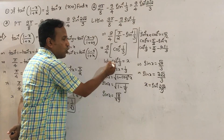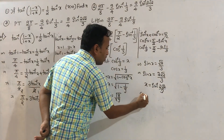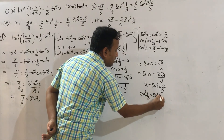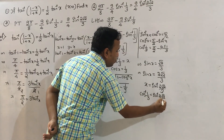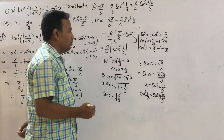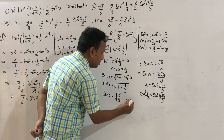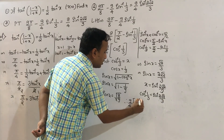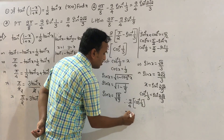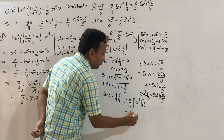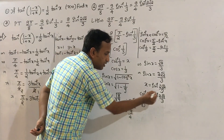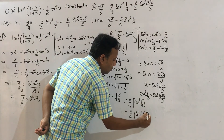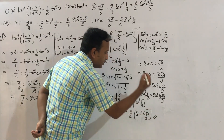Since x means cos inverse (1 by 3), we have cos inverse (1 by 3) equals sin inverse (2 root 2 by 3). Therefore 9 by 4 cos inverse (1 by 3) equals 9 by 4 sin inverse (2 root 2 by 3). That is the answer.